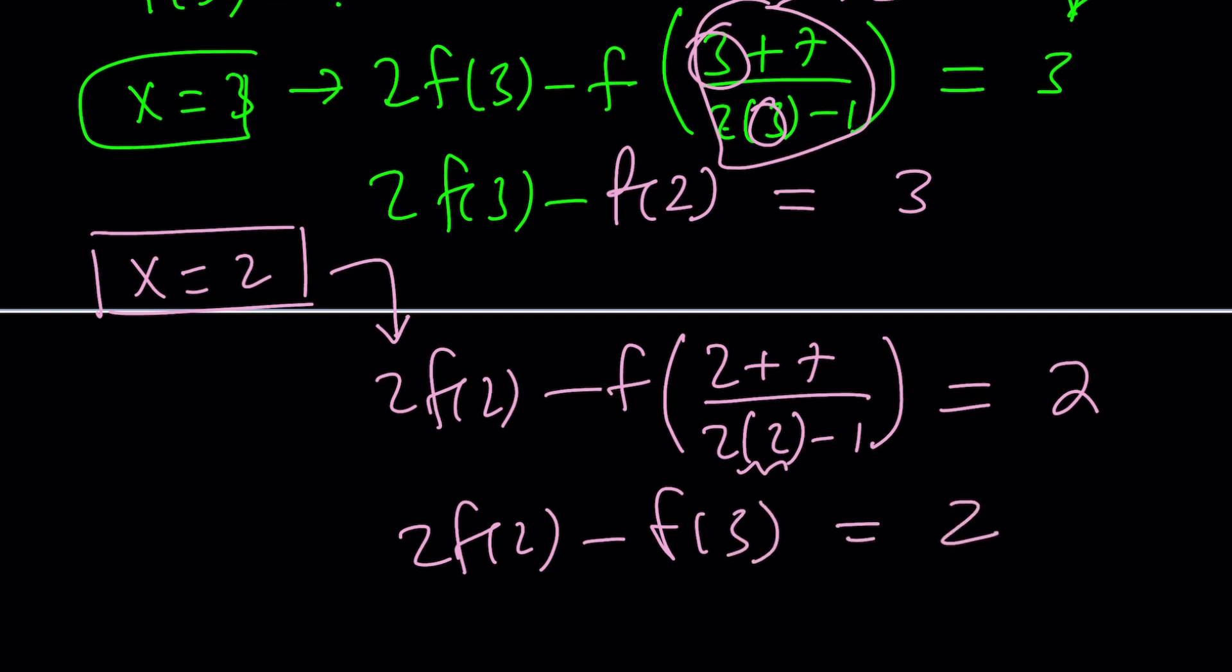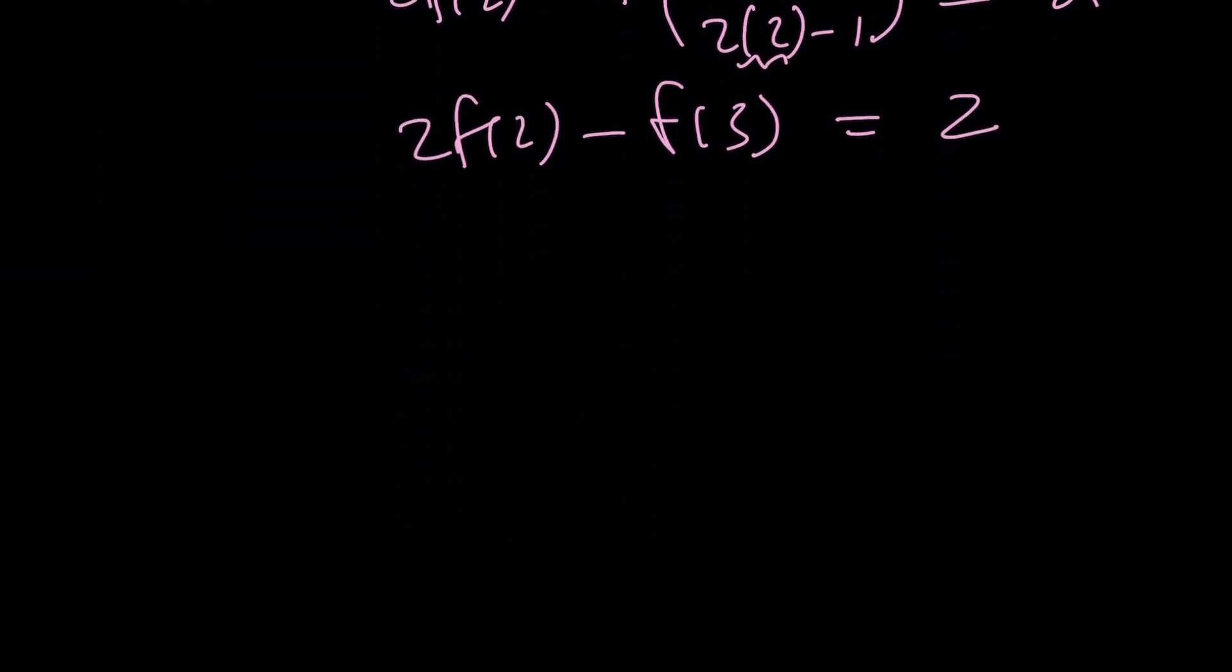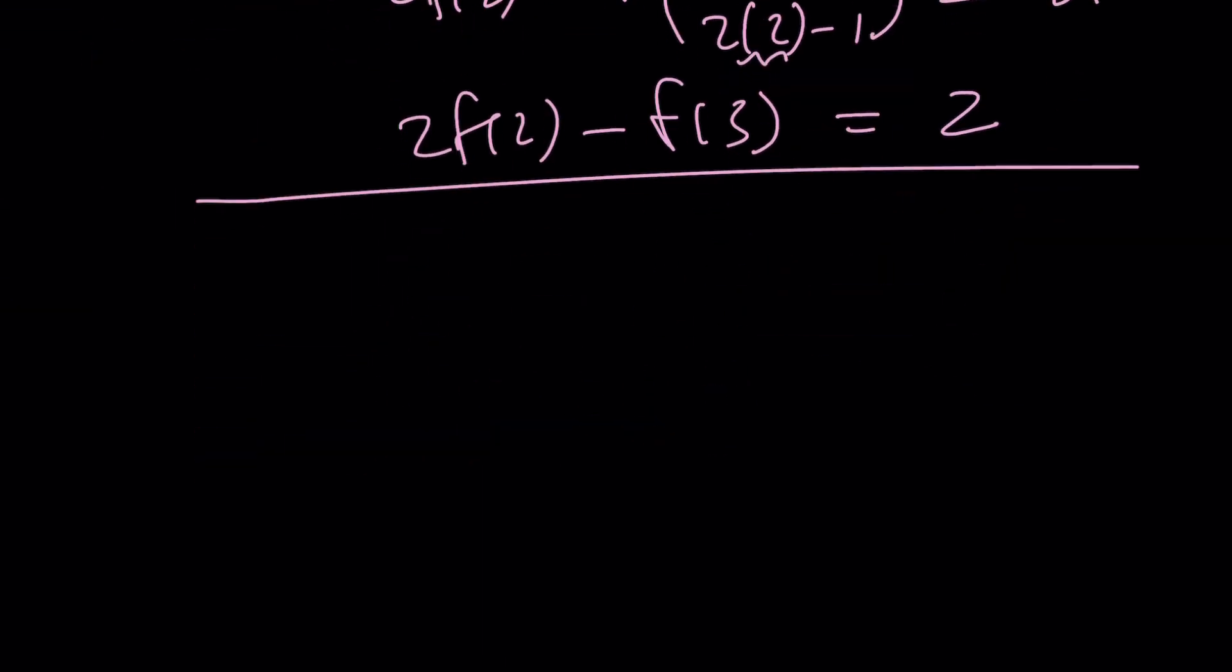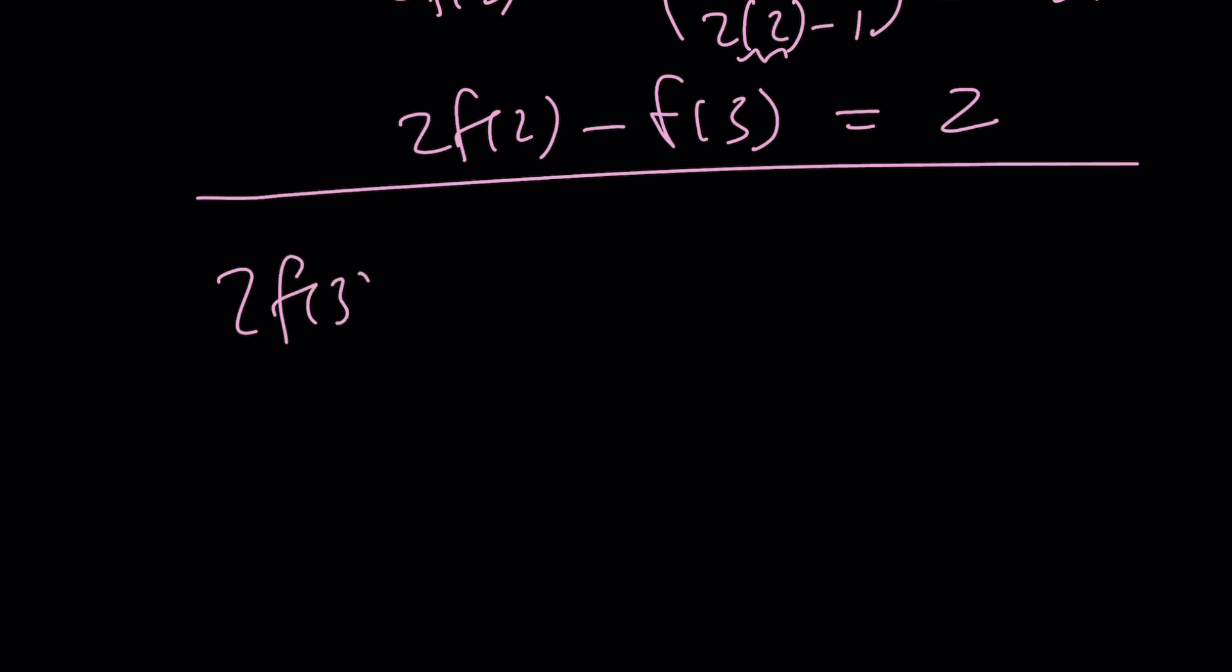We got another equation. And guess what? There's only two unknowns. Let me go ahead and write these two together so we can have a better look. We have 2 times f of 3 minus f of 2 equals 3. And 2 times f of 2 minus f of 3 equals 2. So what else could you solve for? You could also solve for f of 2.